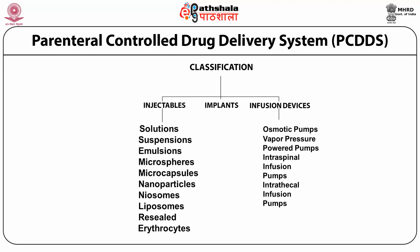Pegylated liposomes can be protected from serum protein binding and phagocytic recognition, providing a longer circulating half-life than regular liposomes. The table on screen classifies parenteral controlled drug delivery systems. Pure injectables include solutions, suspensions, emulsions, microspheres, microcapsules, nanoparticles, neosomes, liposomes, resealed erythrocytes, and more. The second class consists of implant systems. The third, more sophisticated category includes infusion devices such as osmotic pumps, vapor pressure-powered pumps, intraspinal infusion pumps, and intrathecal infusion pumps.